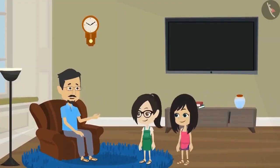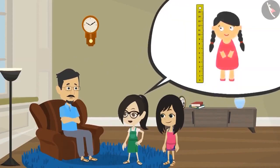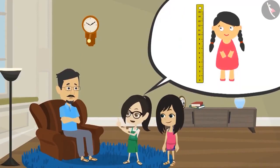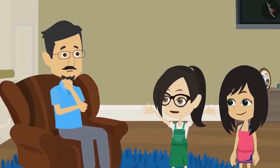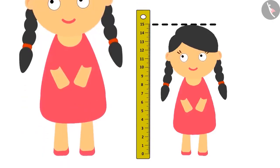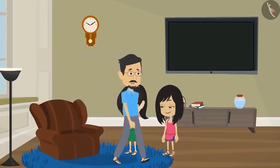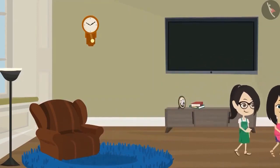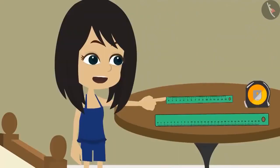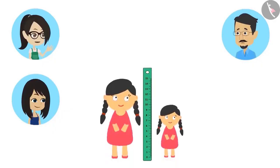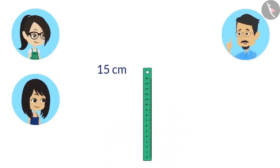Vandana and Neha visit Papa and ask how to measure objects longer than 15 centimeters. Papa says he has a longer scale and brings three scales to their room. The first scale they already have measures up to 15 centimeters. The second scale has markings up to 30 centimeters, so it can measure objects up to 30 centimeters long.